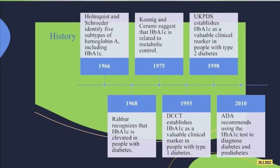Let's talk about the history of hemoglobin A1c. Firstly, in 1966, Huisman and Schroeder identified five subtypes of hemoglobin A, including hemoglobin A1c. Then in 1968, Rahbar recognized that A1c is elevated in people with diabetes.